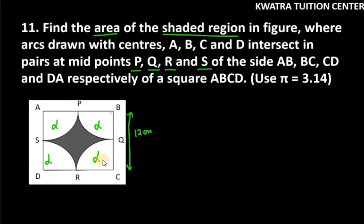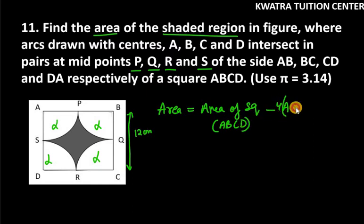So we have to subtract these from area of square. How we need to find area of shaded part is area of square ABCD minus 4 times area of quadrant.